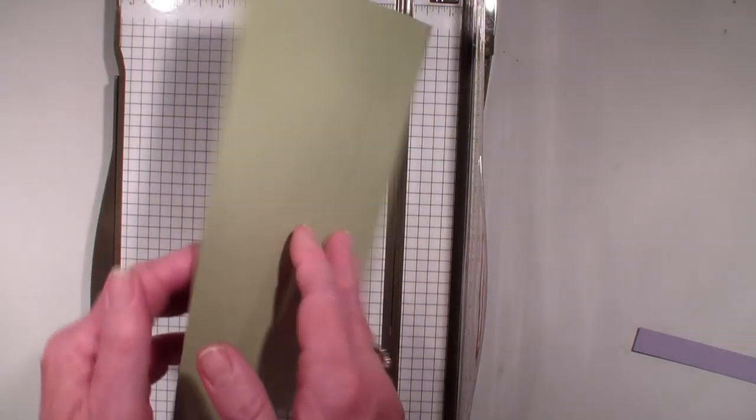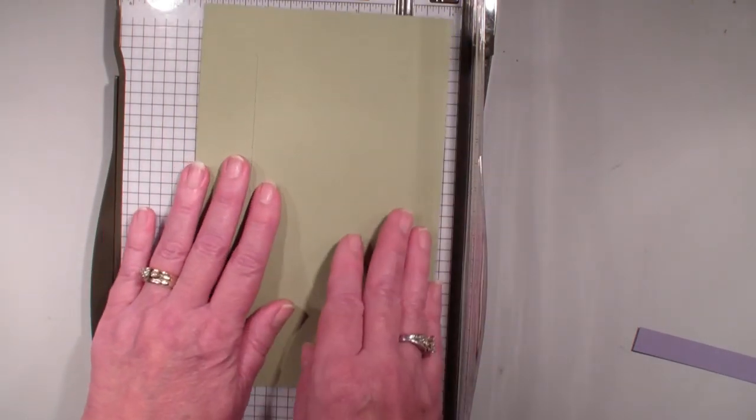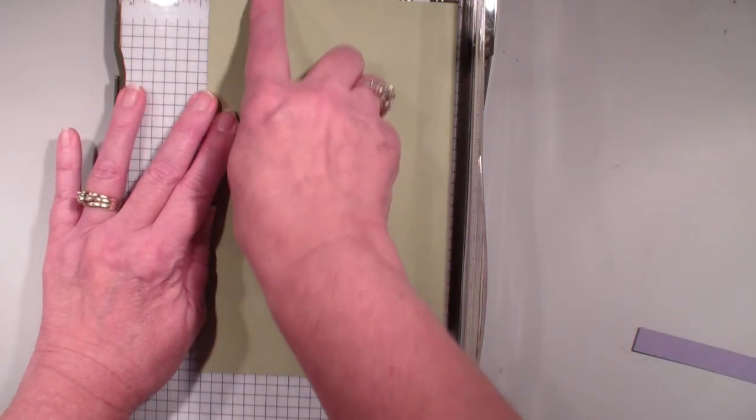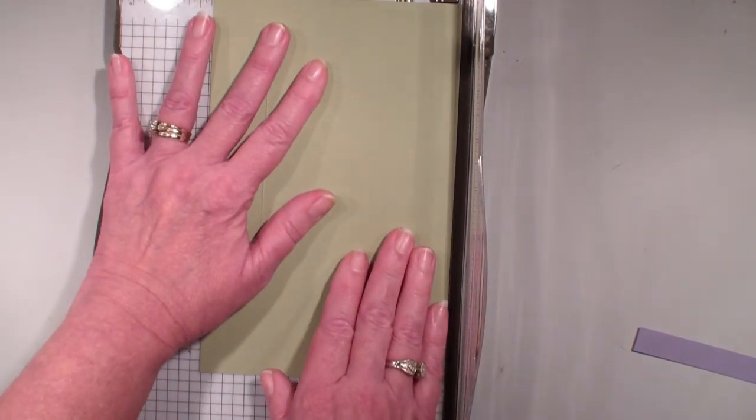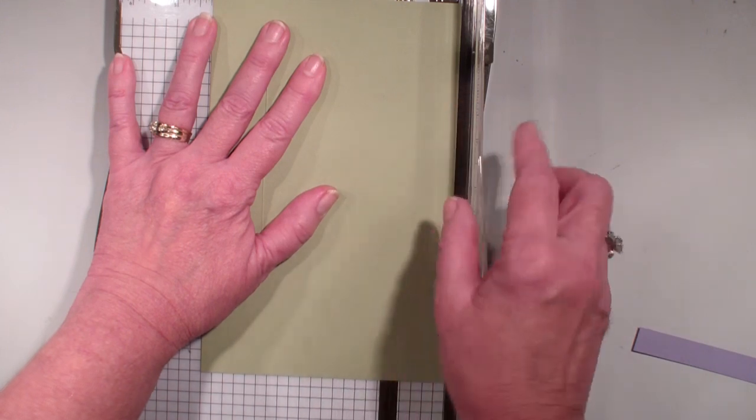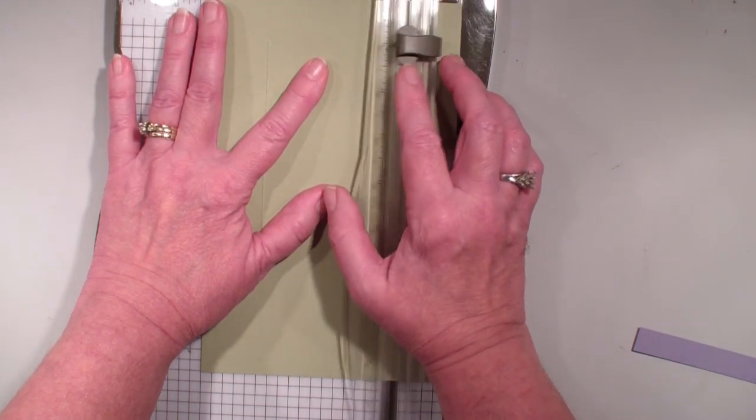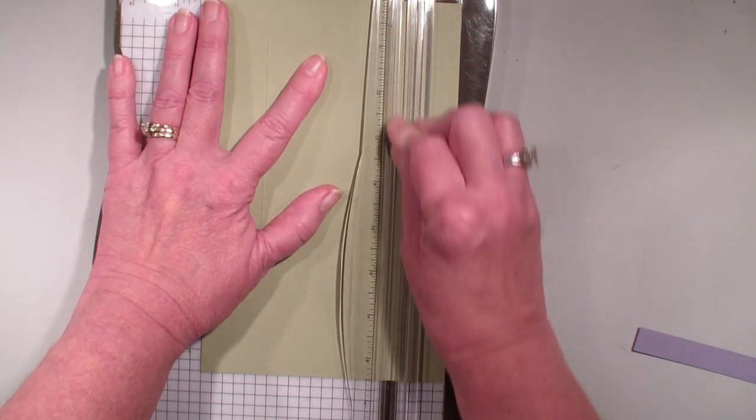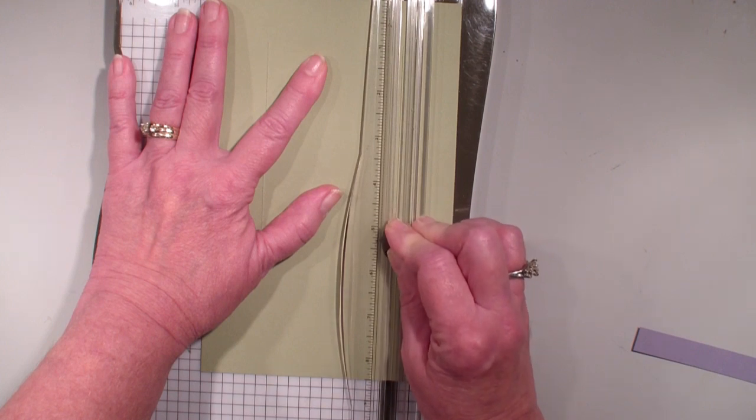I then flipped my paper over like so, which is very important because we want the same 1 inch border on this side. Again, lining it up on the side rail, which is 1¼, we are going to start at the inch and we are going to cut down to the 5¼.